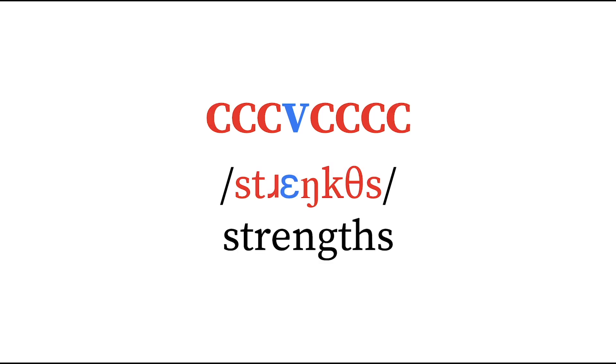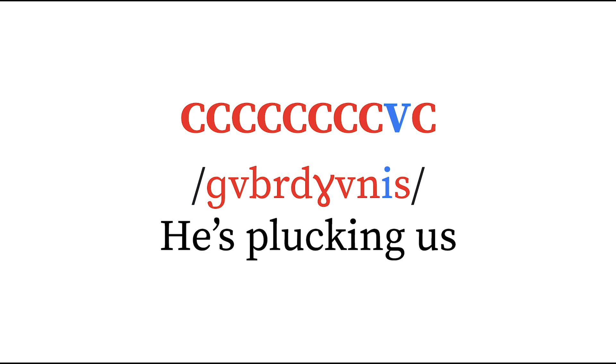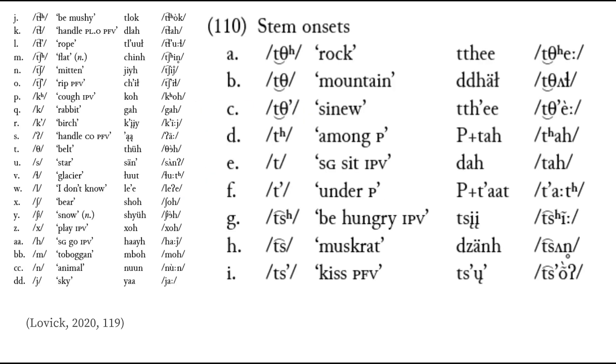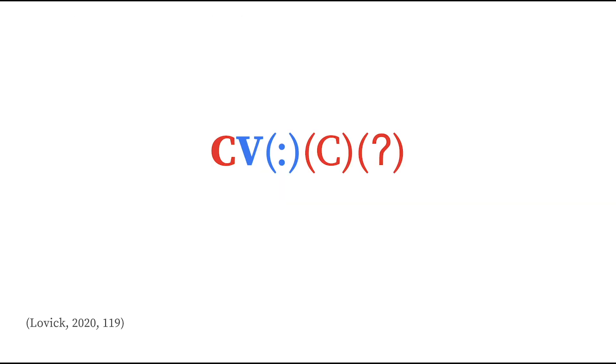But because so many distinctions are marked on the phonetic level, the phonotactics are simpler than, say, English or Georgian syllables. Most syllables include a simple onset and sometimes a simple coda, but the longest possible syllable has a long vowel or diphthong and a two-consonant coda cluster.